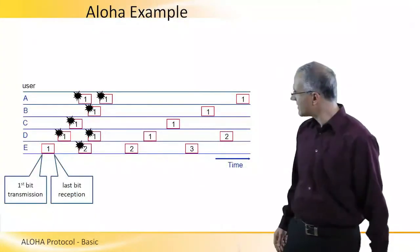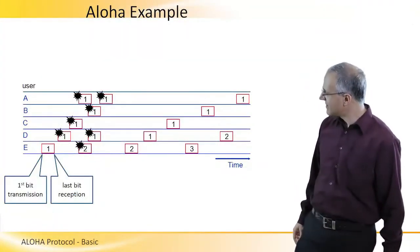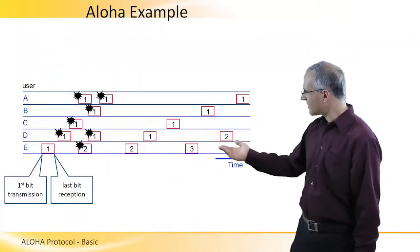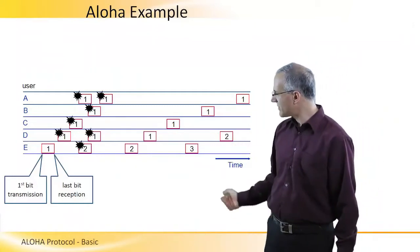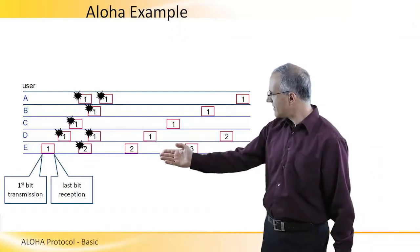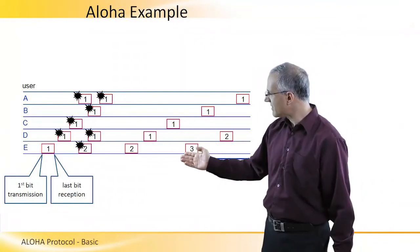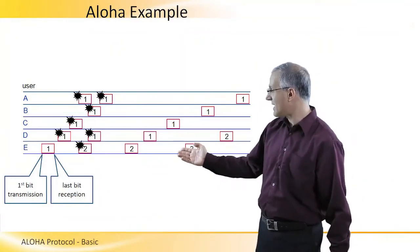In this diagram, we see an example of how ALOHA is working. Time is flowing this way, and each rectangle represents a transmission of a frame where the left end is the transmission of the first bit and the right end is the reception of the last bit.